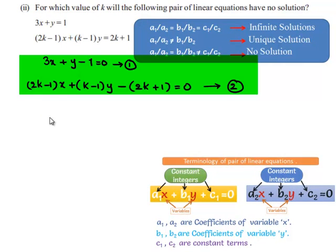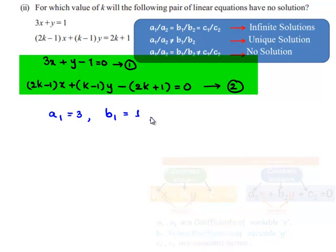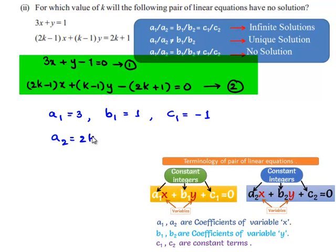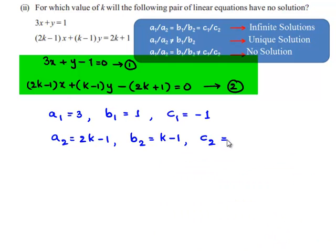Now we identify the coefficients: a₁ = 3, b₁ = 1, c₁ = -1; a₂ = 2k - 1, b₂ = k - 1, and c₂ = -(2k + 1).